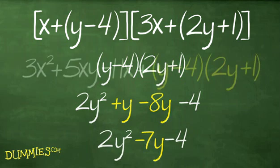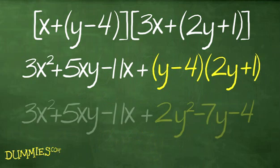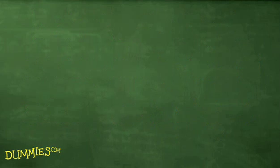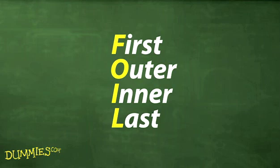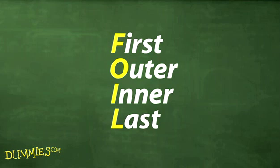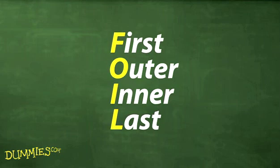Now, replace the two binomials multiplied together with this new result, and you can rewrite the entire problem. This may seem complicated, but using FOIL is actually easier than doing all the distributing. And sticking with the acronym keeps you from accidentally forgetting to multiply one pair of terms.